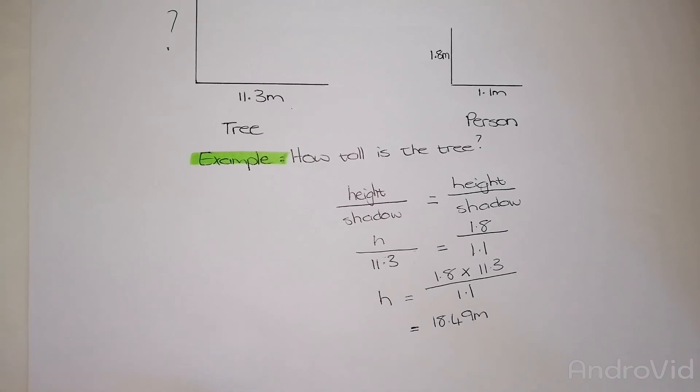And that is how we find the height of a large object using the shadows method. I hope this could have helped. If it did, please like this video, subscribe to my channel, and share it with anyone that might possibly benefit. If you've got any questions, please drop them in the comment section below and I'll get back to you as soon as I can. See you next time, bye.